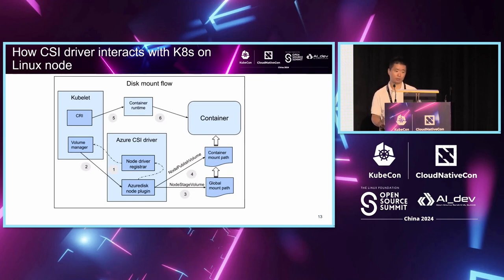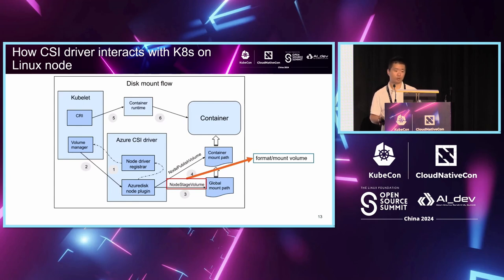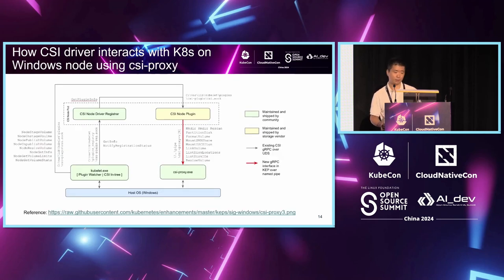This diagram shows how the CSI driver works on a Linux node, using Azure Disk as an example. The CSI driver pod contains two containers: the node driver registrar, which is responsible for registering the CSI driver with Kubernetes, and the Azure Disk node plugin, which can run as a privileged pod and perform storage operations like format and mount volumes through the node stage volume interface. This solution works perfectly on Linux nodes because privileged pods are supported there.